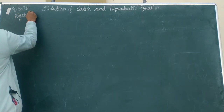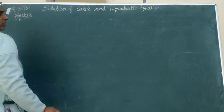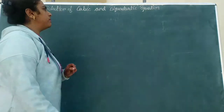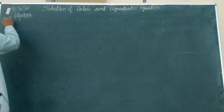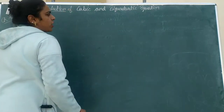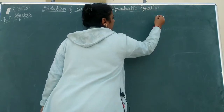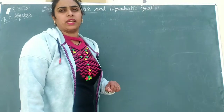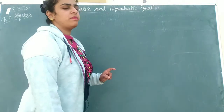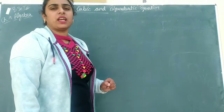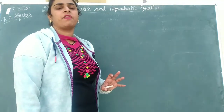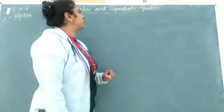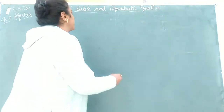Paper 1, Algebra, Chapter Number 9 — that is, Solution of Cubic and Bi-Quadratic Equations. We will learn about cubic equations and bi-quadratic equations.